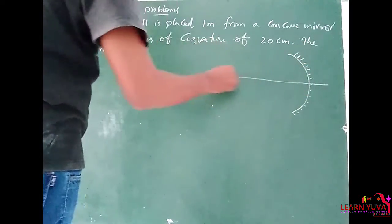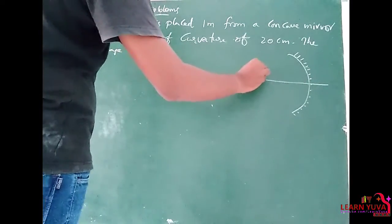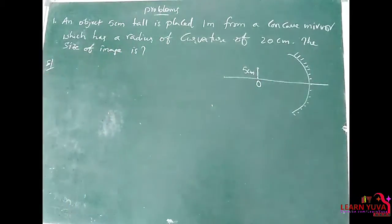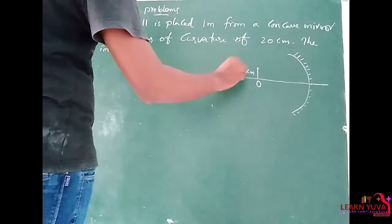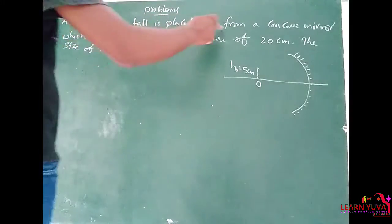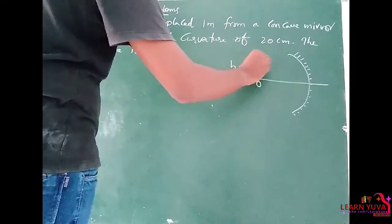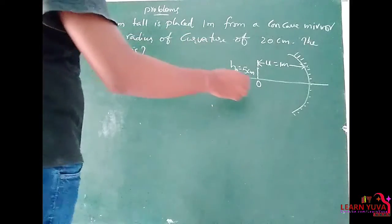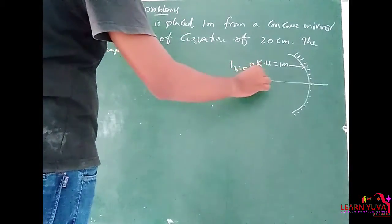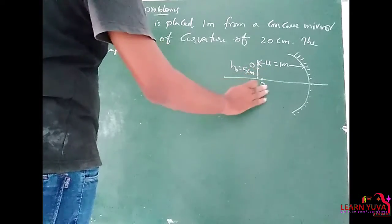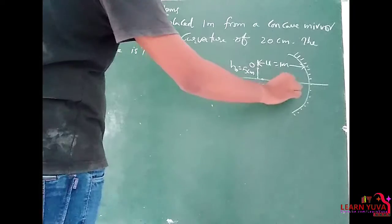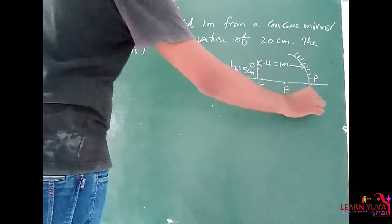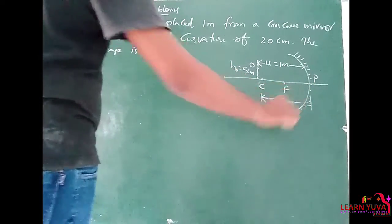The object height is 5 cm. The object is placed 1 meter from the concave mirror, so U is equal to 1 meter. The radius of curvature R is equal to 20 cm. That is the given data.